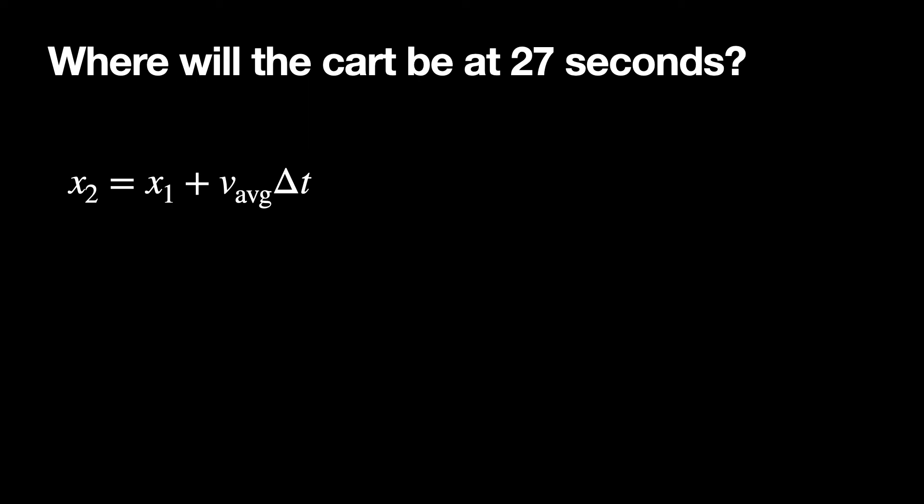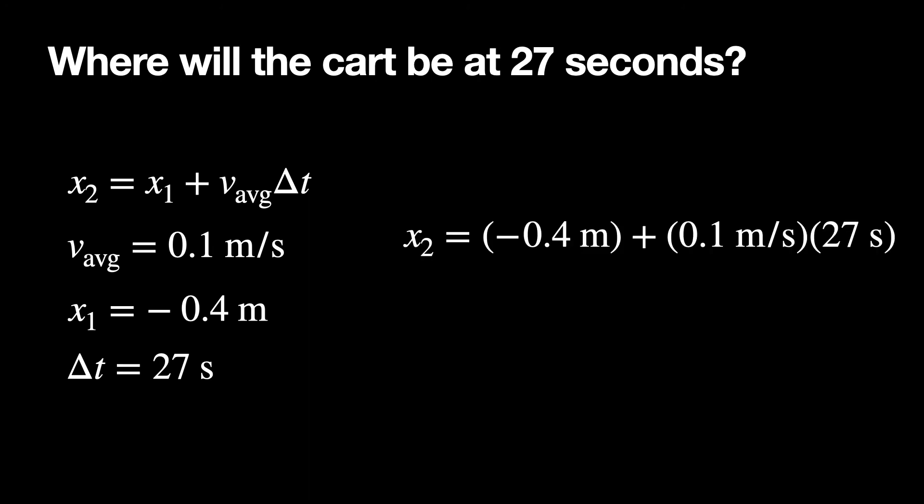Where will the cart be after 27 seconds? So let's start with this equation of the final x is equal to the initial x plus average velocity times delta t. And I'm using average velocity here, and the velocity doesn't change, but I'm still using the average velocity because when we do use a velocity that changes, this still works if I call it average velocity. So my average velocity is 0.1 meters per second. My initial x is negative 0.4 meters, and my time is 27 seconds. So now I just need to put that into my equation. I put in negative 0.4 plus 0.1 times 27, and I get 2.3 meters. So at 27 seconds, I know where it's going to be. And so this is how we can predict the future of where it's going to be.